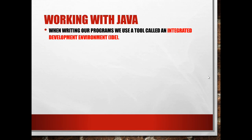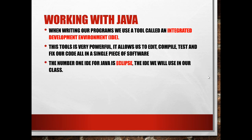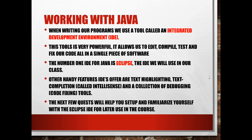When writing our programs in Java, we use a tool called an Integrated Development Environment, or IDE. This tool is very powerful — it allows us to edit, compile, test, and fix our code all in a single piece of software, which lets us work efficiently. The number one IDE for Java is Eclipse, which is what we will use in this class. Other handy features IDEs offer include text highlighting, text completion (called IntelliSense, which predicts what you want to type), and a collection of debugging tools that recognize errors in your code immediately. The next few quests will help you set up and familiarize yourself with the Eclipse IDE.